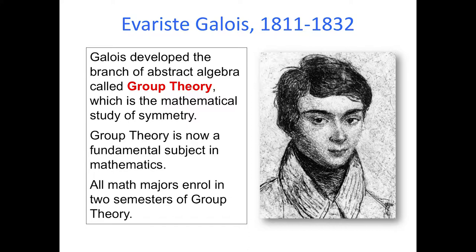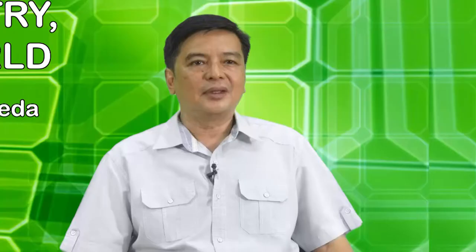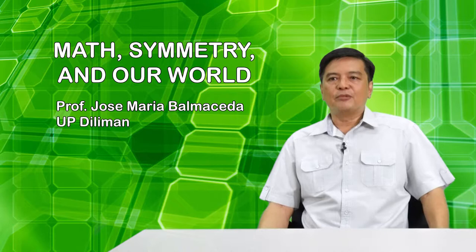That young man was Evariste Galois, who did not even reach his 21st birthday. Galois developed the abstract branch of mathematics called group theory, which is now recognized as the mathematical study of symmetry. Galois was 20 years old at that time, and he wrote all his work and results on symmetry and this new branch of mathematics while in prison. The years that Galois lived were during the decades after the French Revolution, when people were fighting over the monarchy and the civilian government. You could think of Galois as a student activist who was jailed at least two times for his revolutionary activities.